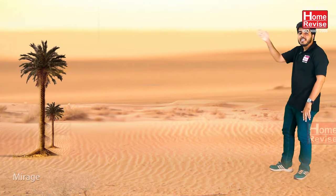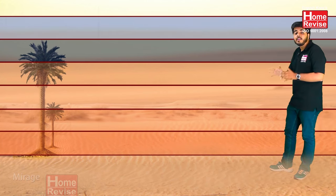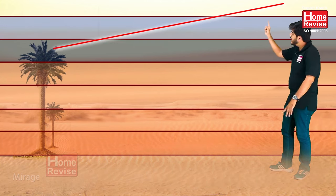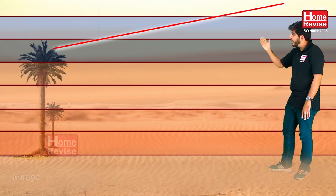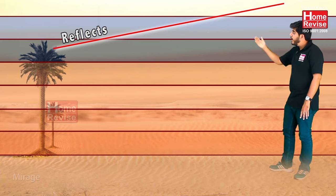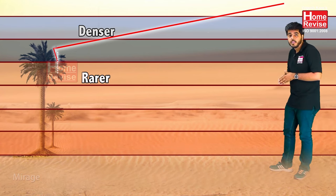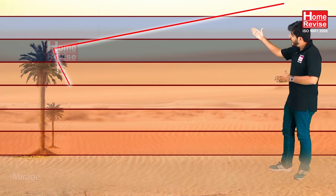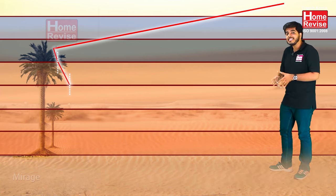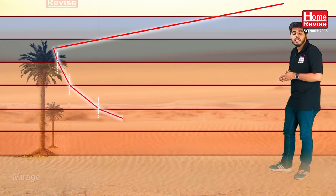Due to this difference in temperature, mirage takes place. Normally, when we see an object there are different layers of air, and these layers are at different temperatures. When sunlight comes and strikes the object — say, a tree — it gets reflected. After getting reflected, it enters the first layer, traveling from a denser medium to a rarer medium, and it suffers refraction. Due to different temperatures and different densities of air at different positions, it suffers continuous refraction.